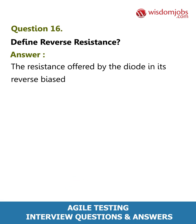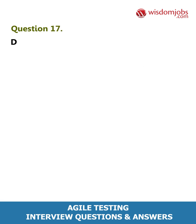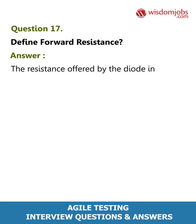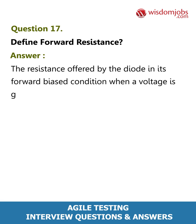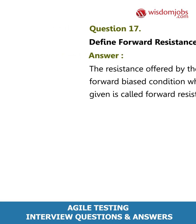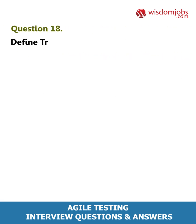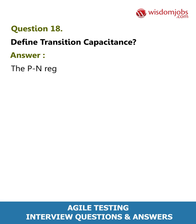Question 16: Define reverse resistance. Answer: The resistance offered by the diode in its reverse biased condition is called reverse resistance. Question 17: Define forward resistance. Answer: The resistance offered by the diode in its forward biased condition when a voltage is given is called forward resistance.